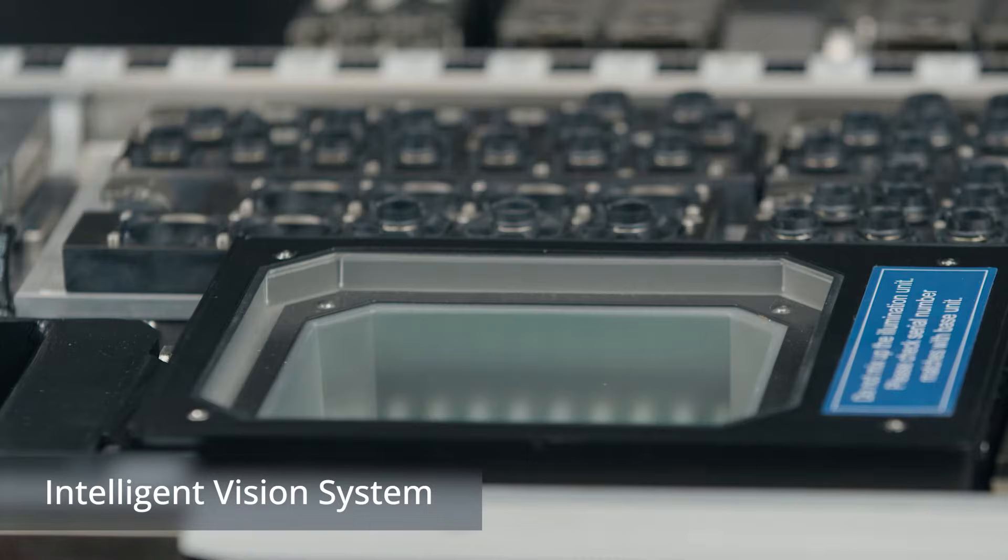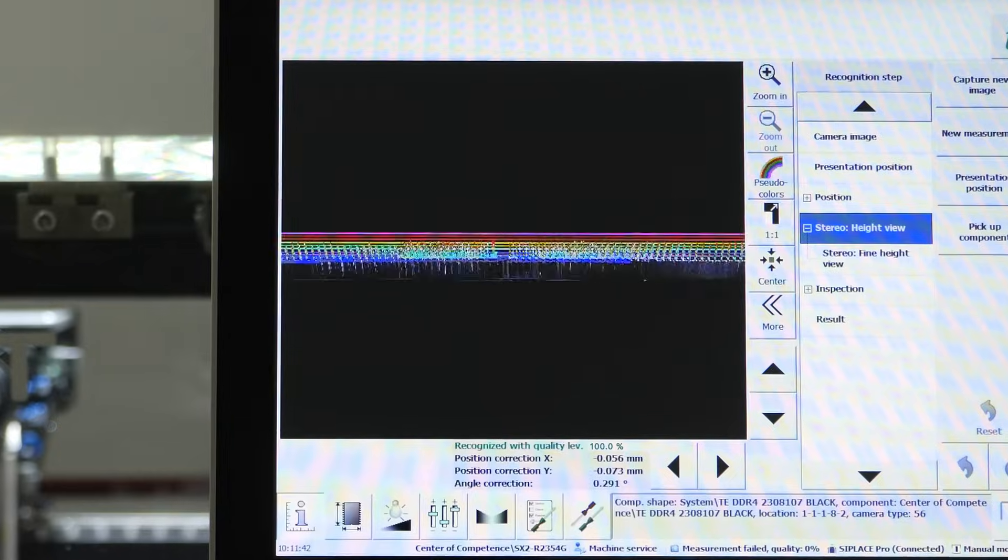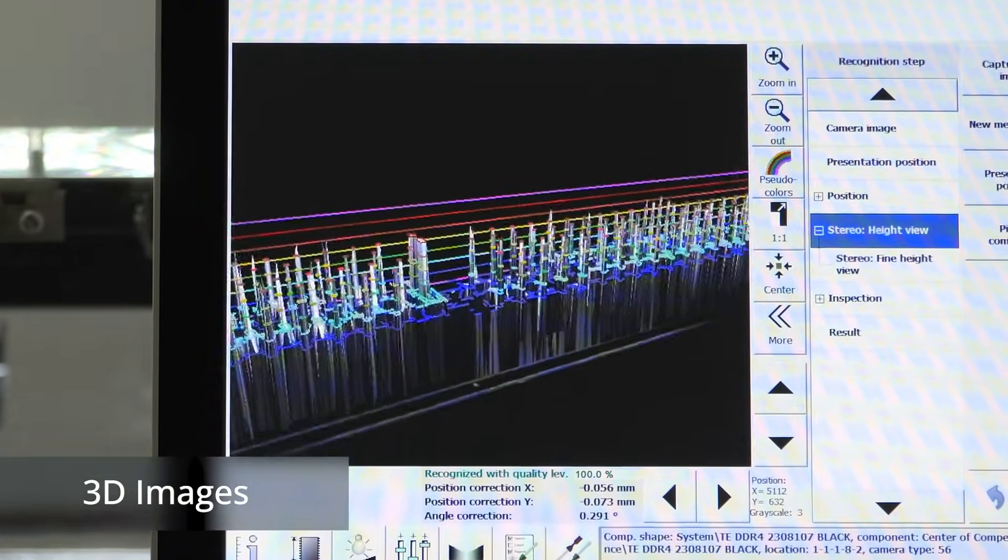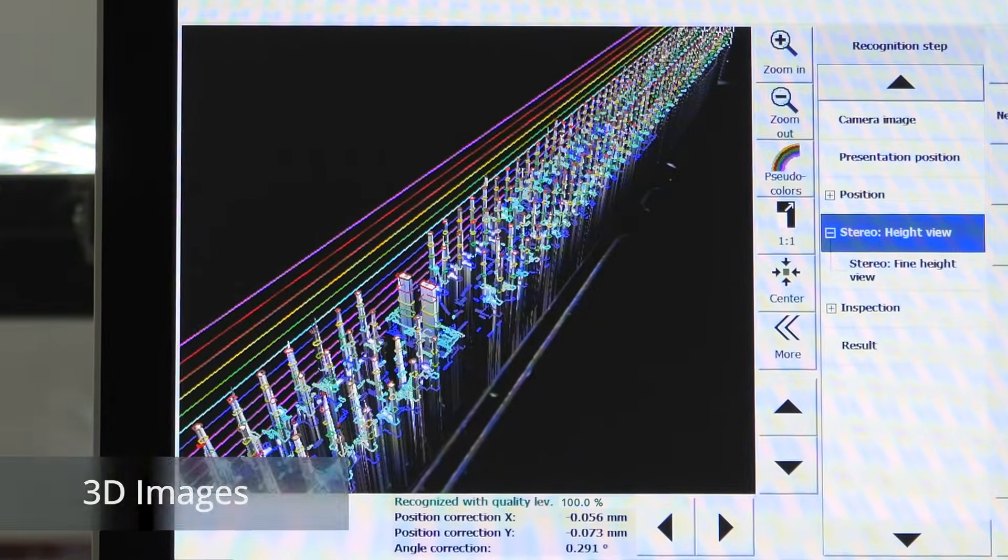The intelligent vision system enables maximum placement quality through enhanced accuracy and precise detection capabilities. Leveraging the advanced capabilities of the high-resolution camera, the system produces precise 3D images, ensuring reliable detection of damaged THT pins.